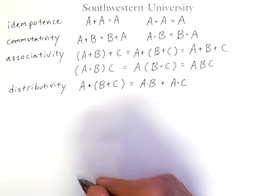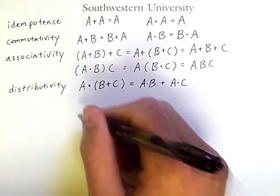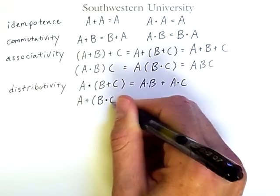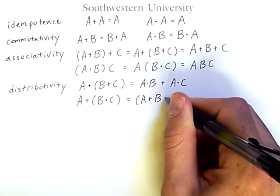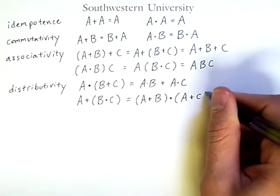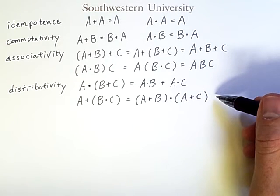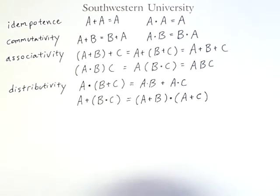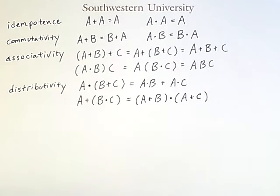However, it turns out that OR also distributes over AND, which results in the following law which may look odd to you. A or B and C is equal to A or B and A or C. So this law is not true for multiplication and addition, but it is true for AND and OR. Yet another manner in which these operators, though similar looking, need to be interpreted differently when doing Boolean logic.